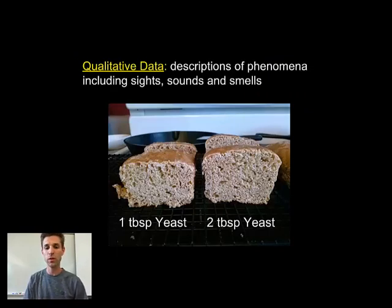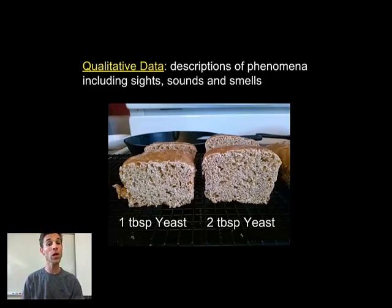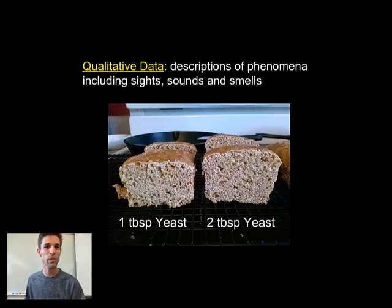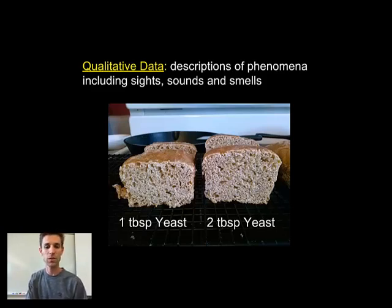Here's a different kind of data. I cut open the bread and was able to evaluate some qualitative data. Quantitative data is data in the form of numbers, while qualitative data are things you can actually see, smell, or hear. In this case, you can simply evaluate the form of the bread. You can see that between the two experimental loaves, the amount of fluffiness — the air pockets that make bread appetizing — isn't all that different. Doubling the amount of yeast didn't solve that problem, although it did make the bread rise a little more. Quantitative data allowed us to make that graph and analyze things a bit better.